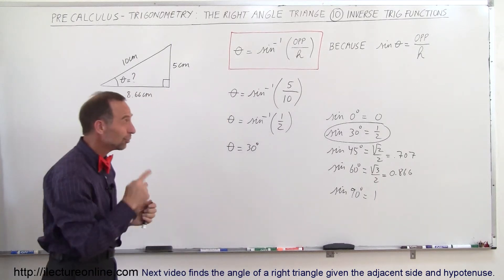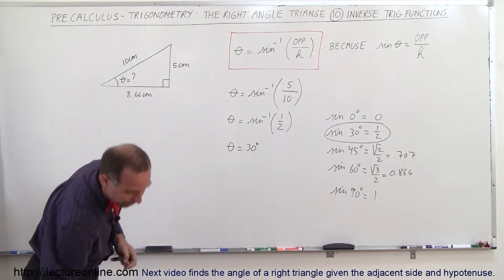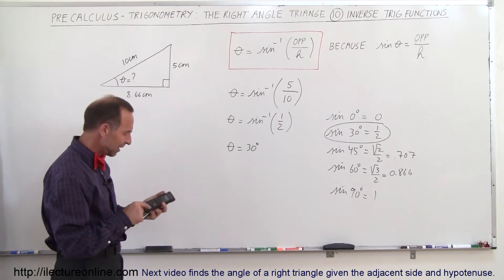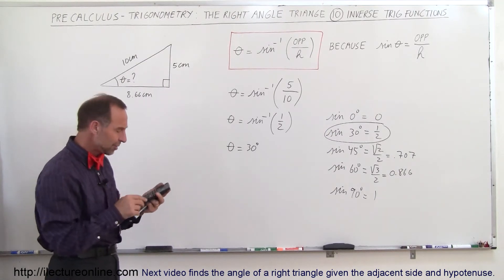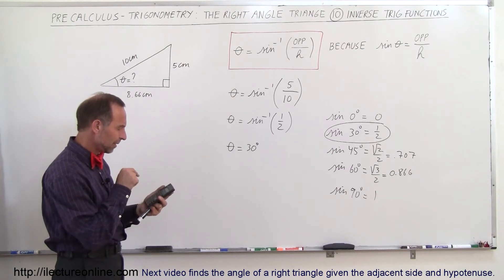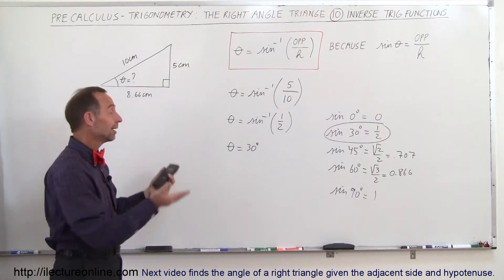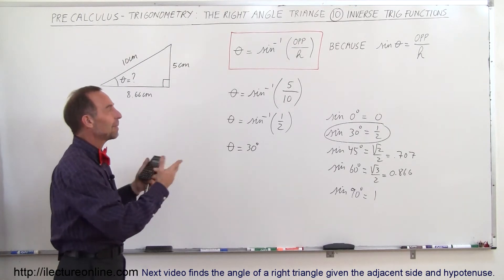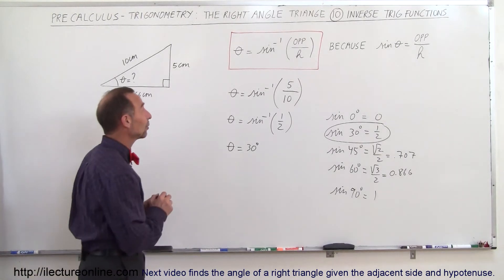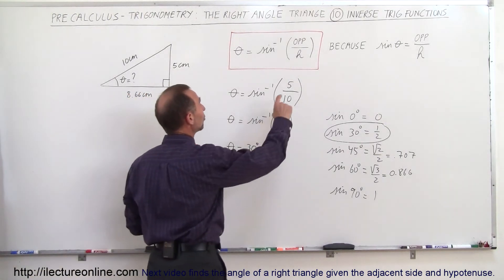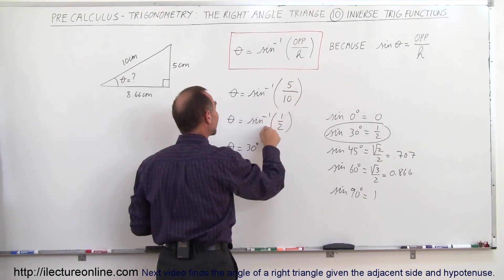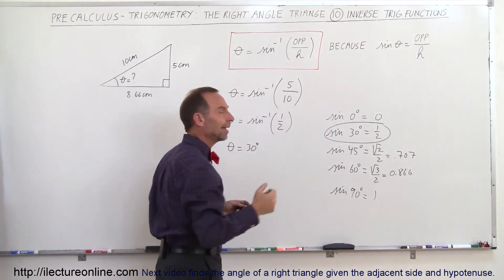Most calculators can do that for you. For example, if you grab your calculator, you go 1 divided by 2 equals — that's 0.5, that's one half — and then you take the inverse sine. You hit the second function shift sine and you get 30. It gives you the angle just like that. Most calculators can automatically give it to you, but it's nice to know how to do it without the calculator. It's nice to realize that if the ratio of the opposite side to the hypotenuse is equal to one half, the arc sine of that tells you the angle is 30 degrees.